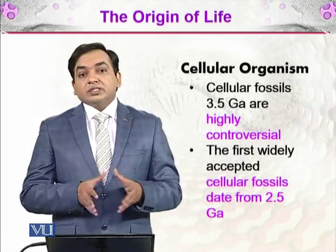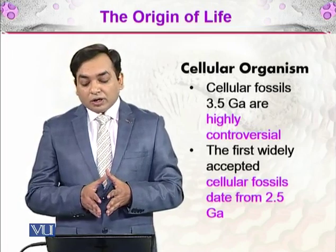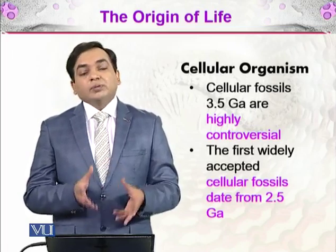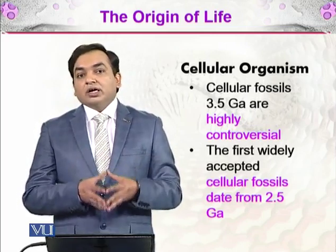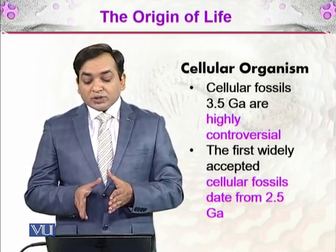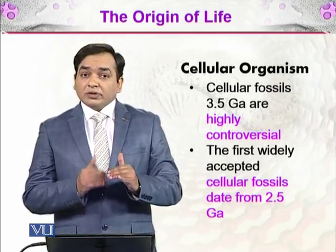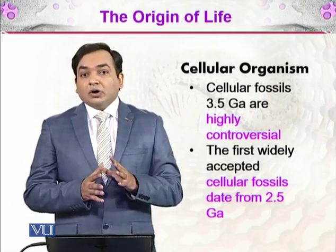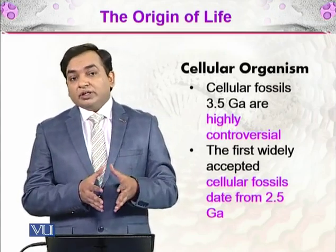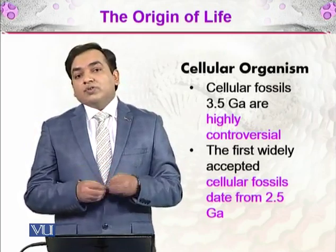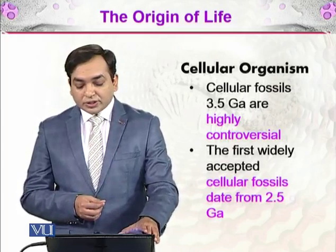Then there come cellular organisms. Cellular fossils of 3.5 giga annum are highly controversial — some people believe these are actually cellular organisms, while others deny any such evidence. The first widely accepted cellular fossils date from 2.5 giga annum. There is some disagreement among scientists, but 2.5 GA is a figure on which all scientists agree.